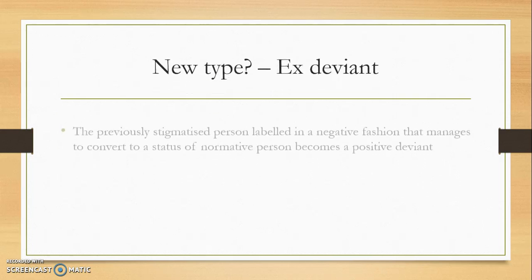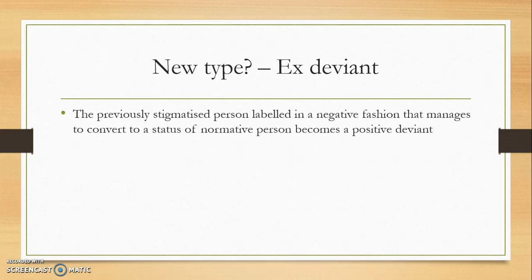There's also a new type: the ex-deviant. This is a previously stigmatized person labeled in a negative fashion who manages to convert to the status of a normative person and thereby becomes a positive deviant. It's interesting — you're first seen as deviant as a criminal or ex-con, but when you actually convert back to being a normal person, you're seen as a positive deviant because not many people do. Many people stay stuck in that stigma or role, so making that change is what qualifies someone as an ex-deviant positive deviant.